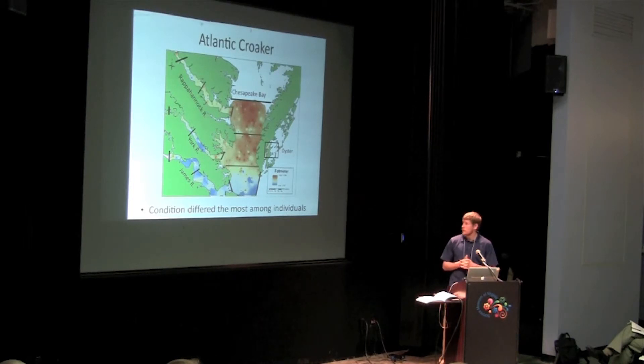We do see some trends across the regions with the upper and middle Bay region producing Croaker in the highest condition, whereas the James River and the lower Bay had Croaker in low condition. And again, we still see those red and blue dots that highlight the differences among our sampling locations.